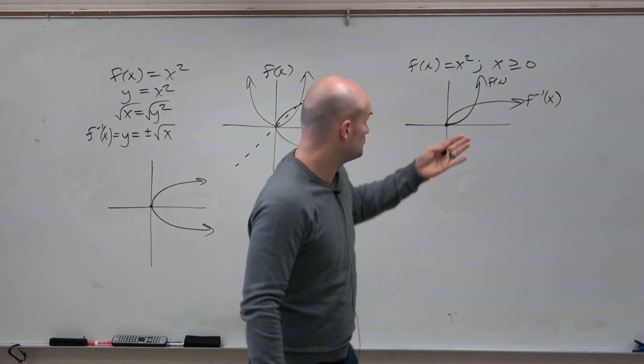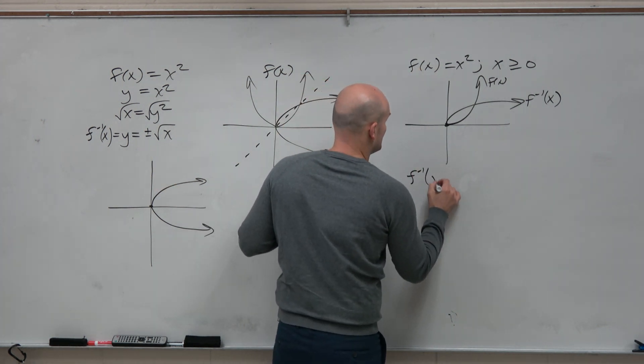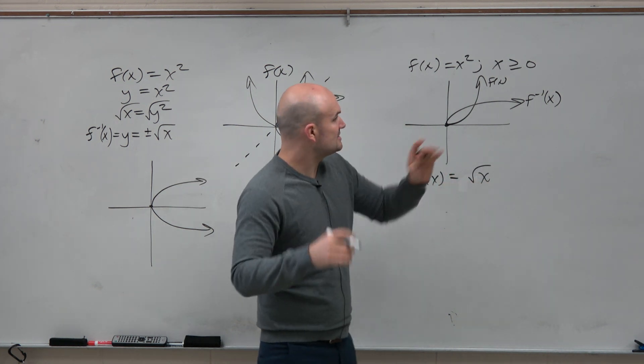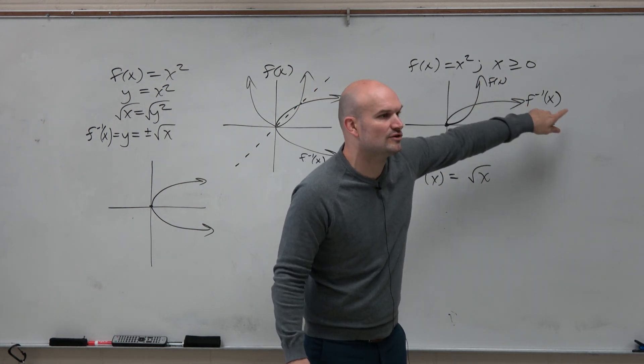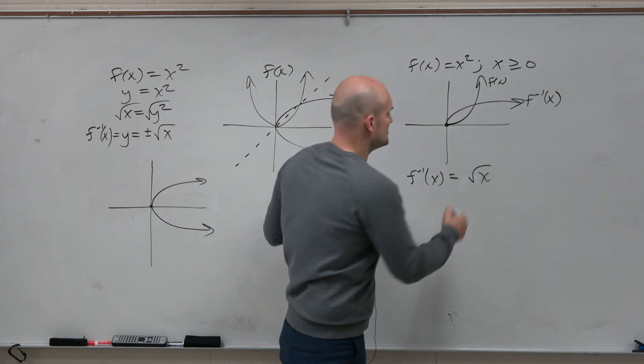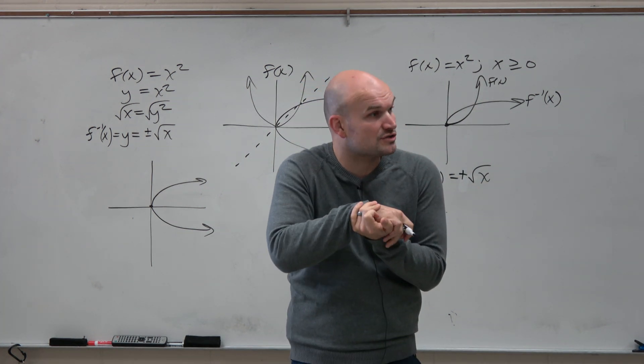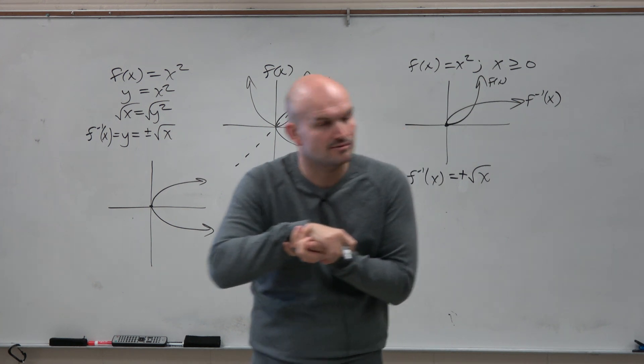Now, algebraically, really, the equation for my inverse is the same. f inverse of x is going to equal the square root of x. But again, since we have this original restriction, do we see that we're only taking the positive version of the square root of x? So I'm just going to write a plus. You don't need to write a plus. But I'm just writing that it's the positive version of the square root. It's already assumed as positive. I'm just putting it in there so you guys can see.